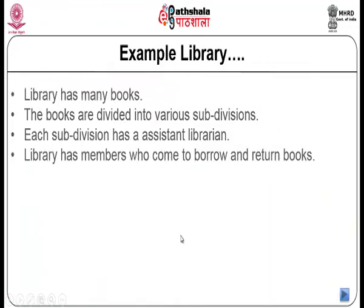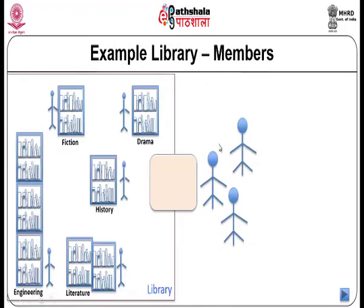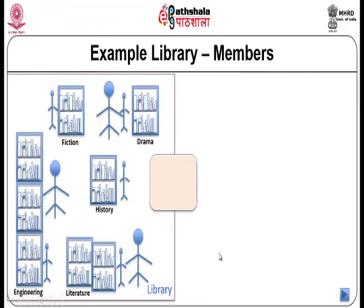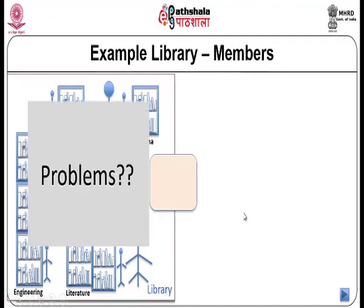The library has members who come to borrow and return books regularly. A member needs to know which assistant librarian handles which subdivision. If a member has a specific choice, they must know which assistant librarian to approach and interact with that particular assistant librarian. Based on the member's choice, the member goes to a specific assistant librarian and interacts with them for a book.